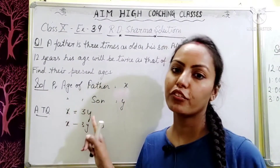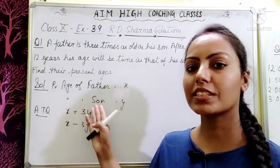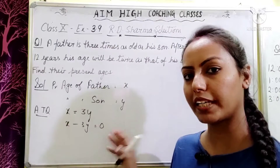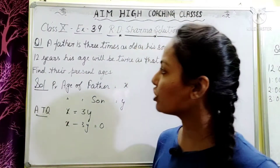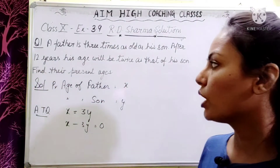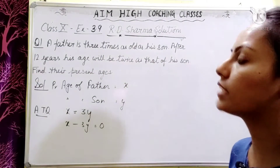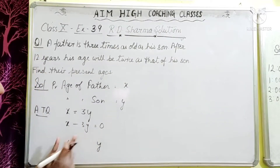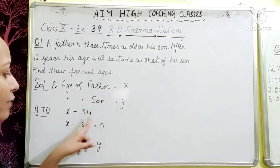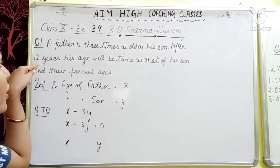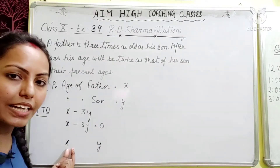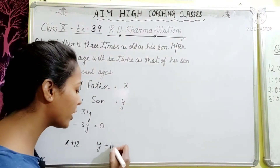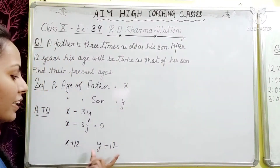x is father's age, 3y is son's age - we established that father is three times son's age, giving x − 3y = 0 as equation 1. For the second equation: after 12 years, father's age becomes x + 12 and son's age becomes y + 12. The condition says father's age will be twice son's age then.